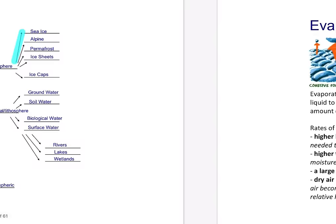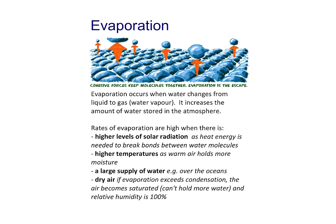Starting with water processes — most obviously, evaporation occurs when water changes from liquid to gas, increasing the amount of water stored in the atmosphere. High rates of evaporation depend on: higher levels of solar radiation breaking bonds between molecules, high temperatures, a large supply of water, and dry air. If evaporation exceeds condensation, the air becomes saturated — relative humidity reaches about 100%.